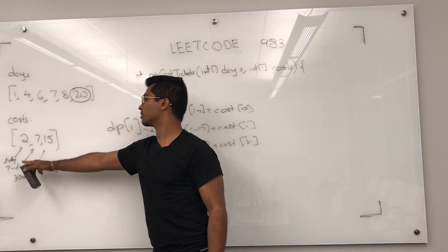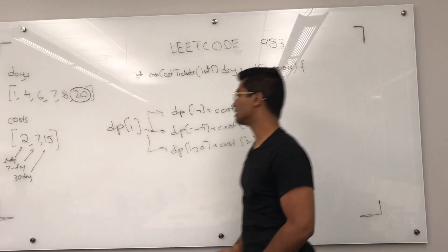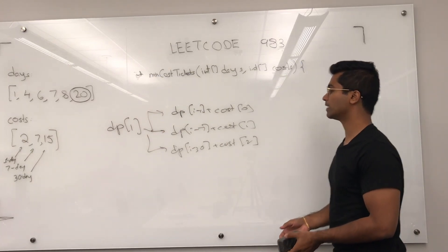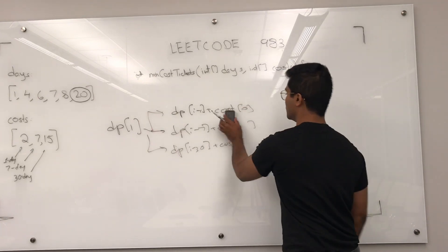Now, these costs come from the cost array that they gave, so we don't have to worry about populating that. All we have to do is pick whichever one is there.